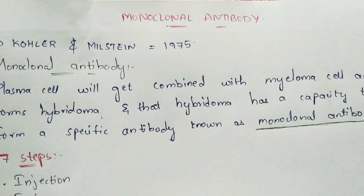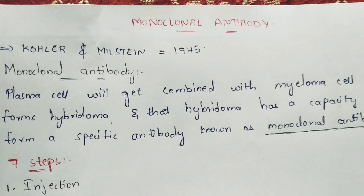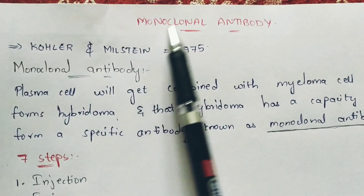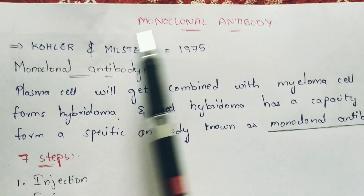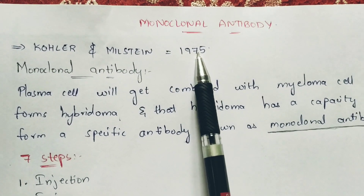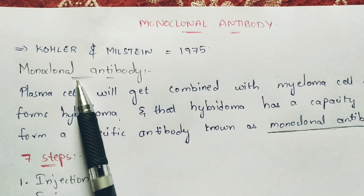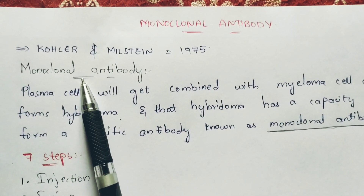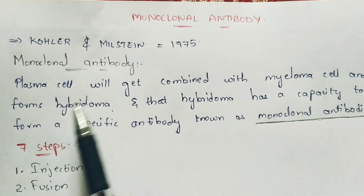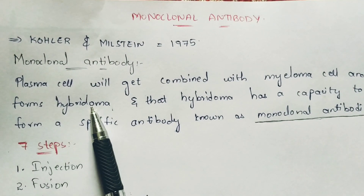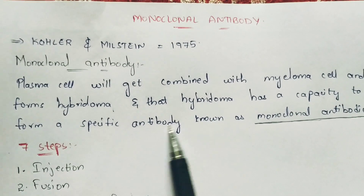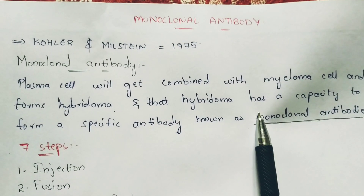I am going to take an example so that you can properly understand. This monoclonal antibodies extraction was firstly discovered by Kohler and Milstein in 1975. Coming to the definition: plasma cell will get combined with myeloma cell and forms hybridoma cell, and that hybridoma cell has a capacity to form a specific antibody known as monoclonal antibodies.